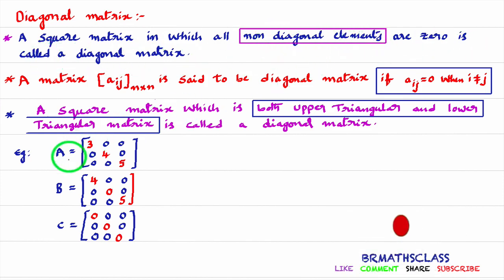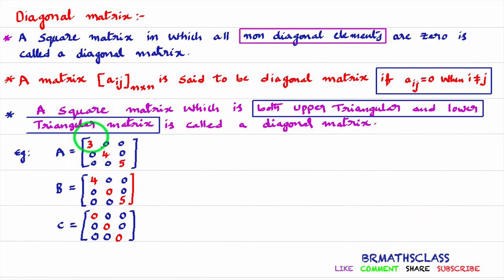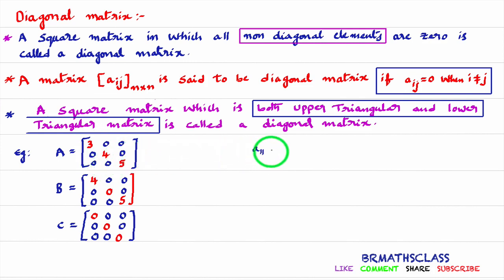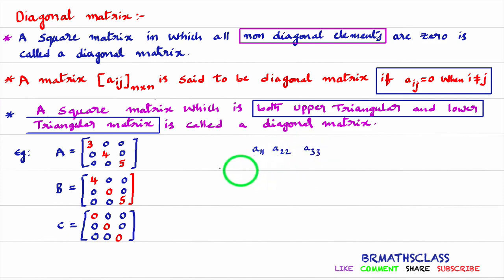Non-diagonal elements — observe this example. What are non-diagonal elements? The elements 3, 4, 5 are known as Diagonal Elements. Whatever remaining elements are there, they are known as non-diagonal elements. The elements A11 (first row, first column), the element in second row second column, and the element in third row third column — these are known as Diagonal Elements. All remaining elements are known as non-diagonal elements.